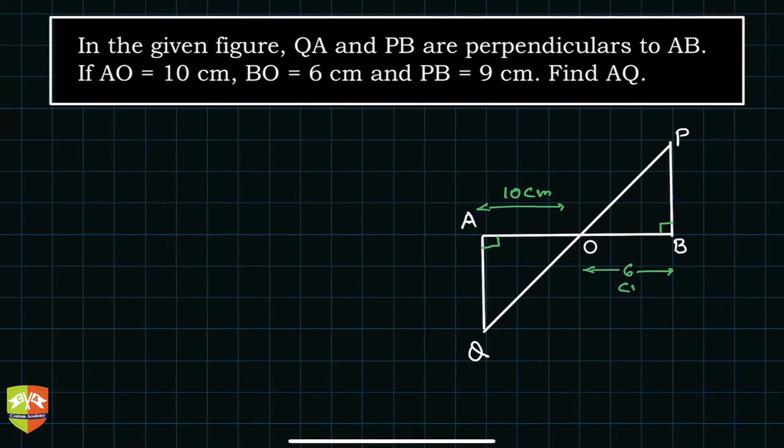This is given, and PB is 9 cm. And what we need to find out is the length of AQ. So how to go about it?